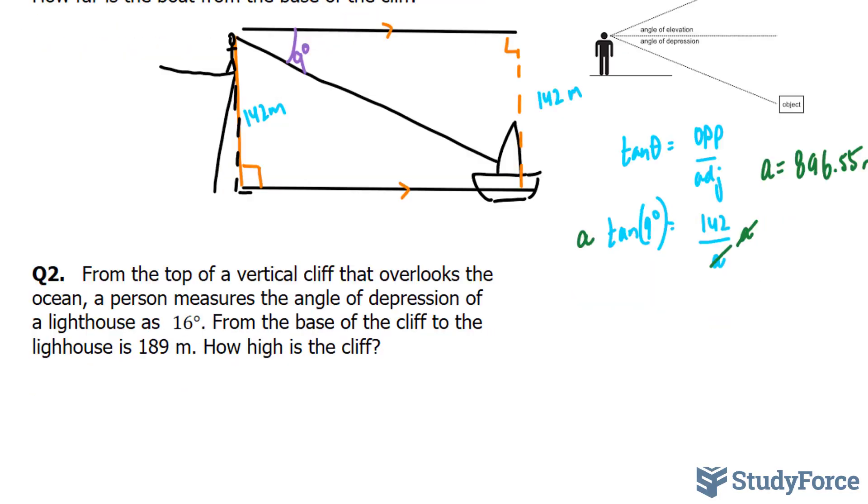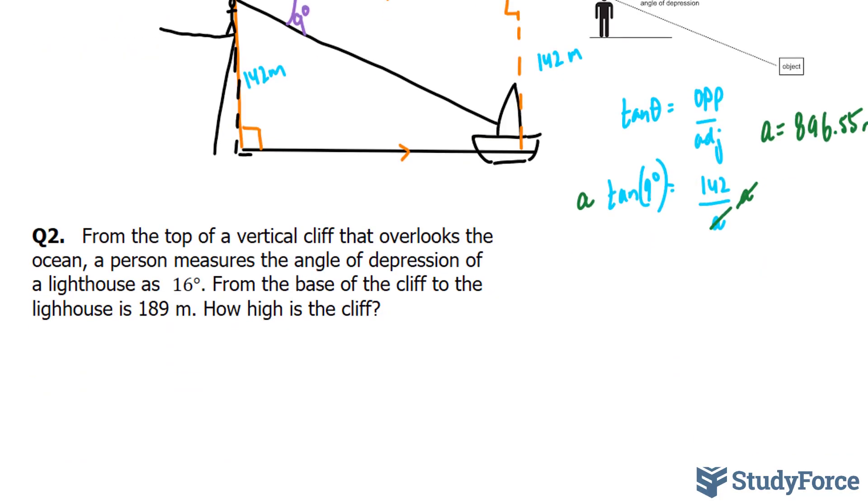Let's try to tackle another question similar to this. From the top of a vertical cliff that overlooks the ocean, a person measures the angle of depression of a lighthouse as 16 degrees. From the base of the cliff to the lighthouse is 189 meters. How high is the cliff?